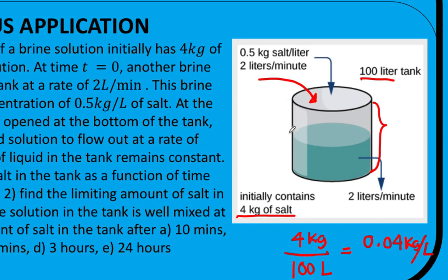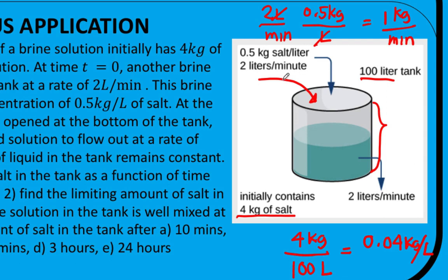Then there is an inflow of another brine solution that contains 0.5 kilograms of salt for every liter, and the rate of inflow is 2 liters per minute. We can simplify this as 2 times 0.5, which is 1 kilogram of salt per minute. However, at time equals 0, right at the moment that there is an inflow of this brine solution into the tank, the stopcock is also opened, allowing the liquid to overflow at the same rate as the inflow. So the outflow rate is 2 liters per minute. If 2 liters are coming into the tank, there are also 2 liters of liquid coming out of the tank, so the amount of liquid in the tank remains constant at 100 liters.